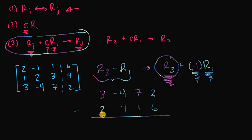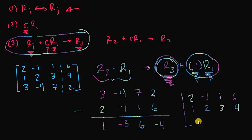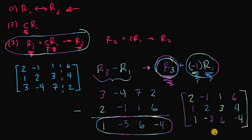Subtracting row one from row three: 3-2=1, -4-(-1)=-4+1=-3, 7-1=6, 2-6=-4. The new matrix keeps row one as 2, -1, 1, 6 — it didn't change even though we multiplied it by negative one, because this rule only changes the row we're adding to. Row two remains 1, 2, 3, 4, and the new row three is 1, -3, 6, -4.